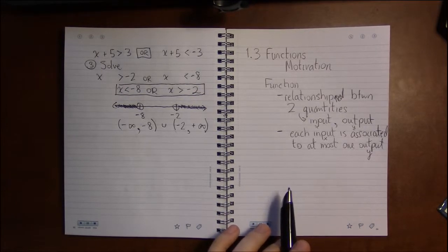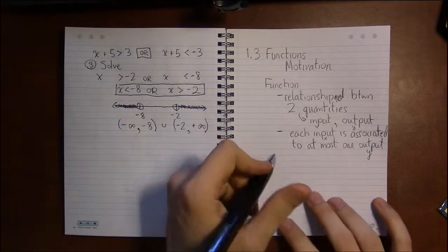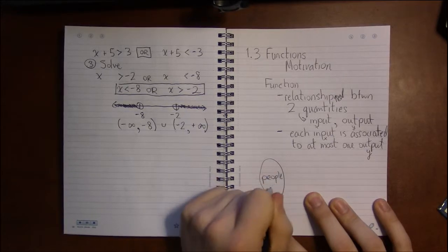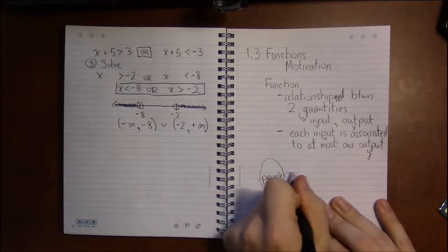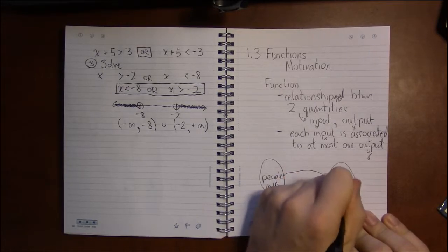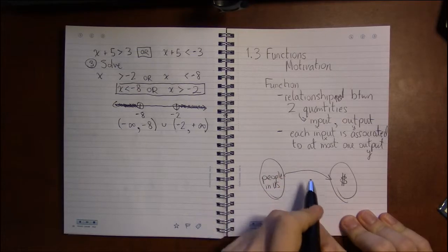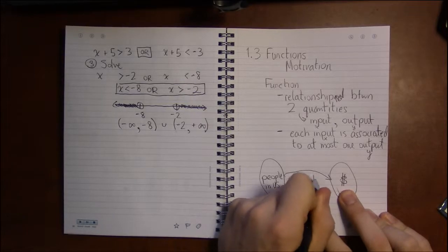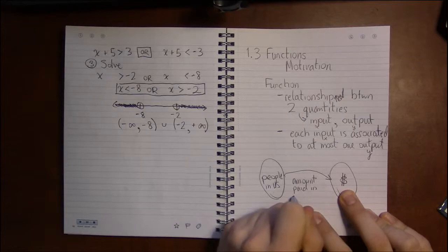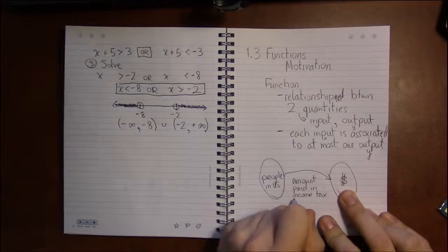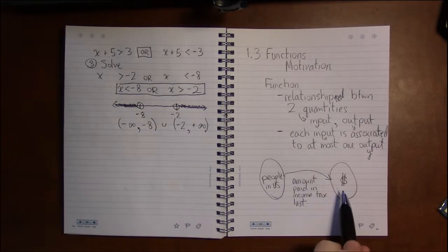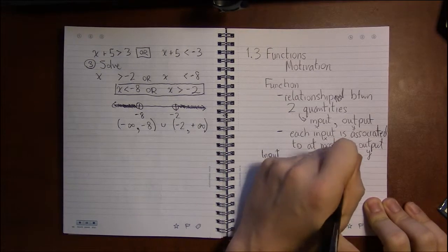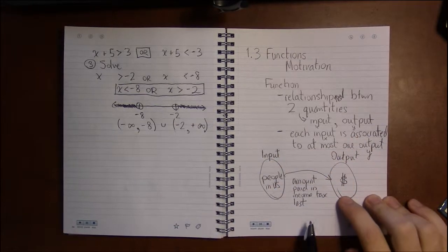Let's take a look at some examples. For instance, if I look at the collection of people in the U.S., each person pays some amount of money in income tax. So that's a relationship right there: how much did you pay in income tax last year? Each person is associated with a particular dollar amount, so the person is our input and our output is the amount that person paid in income tax last year.